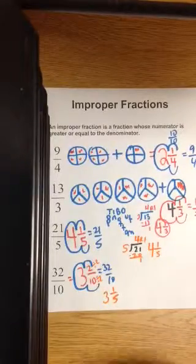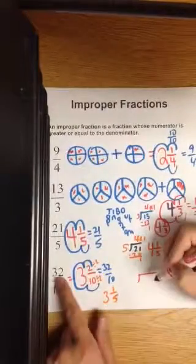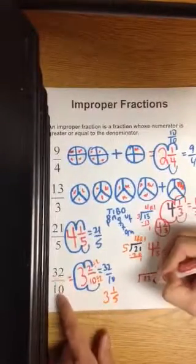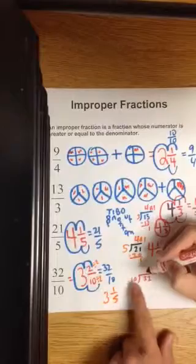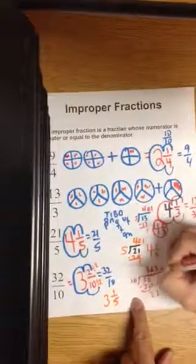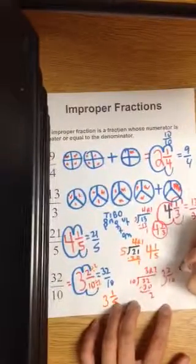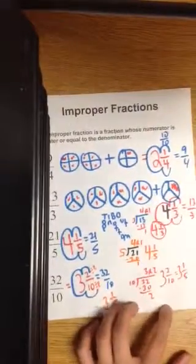Again, what if you cannot do this in the head? Let's do the tie bow method for those who like it. Top number goes in, bottom number goes out. Can 10 go in 32? Three times. Our remainder is two. So three and two ten, which simplify to three and one fifth.